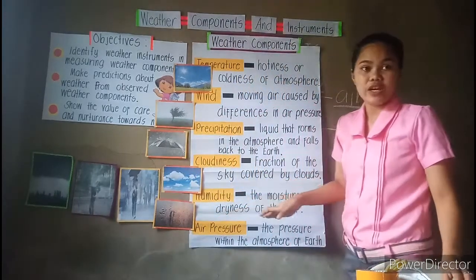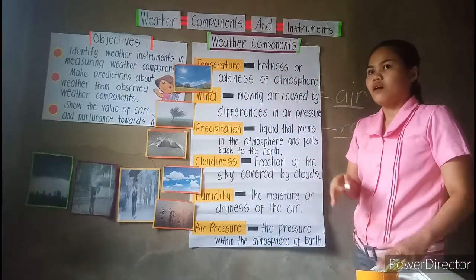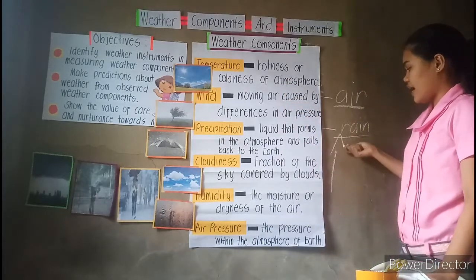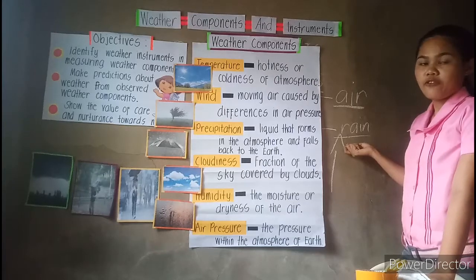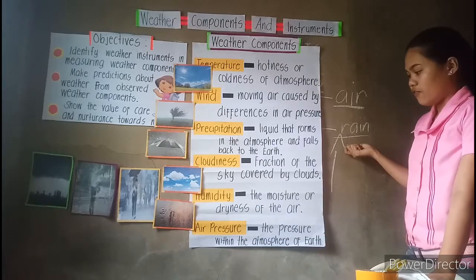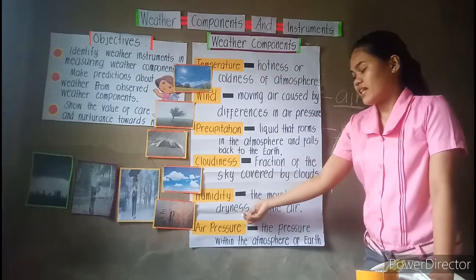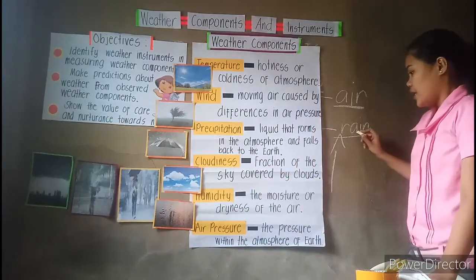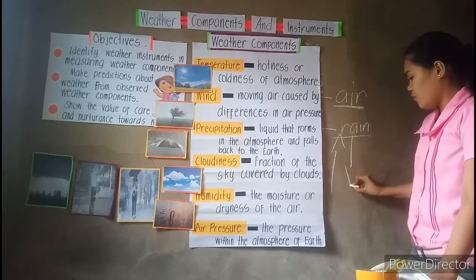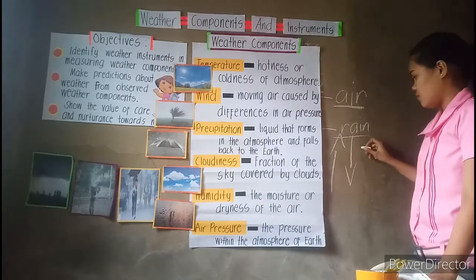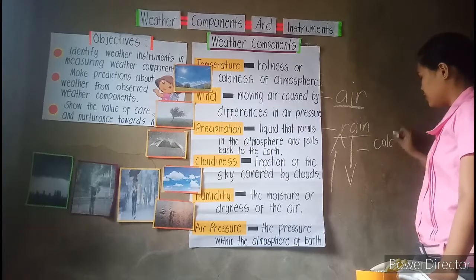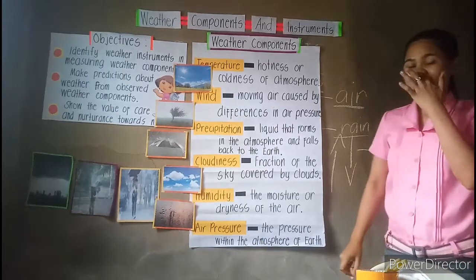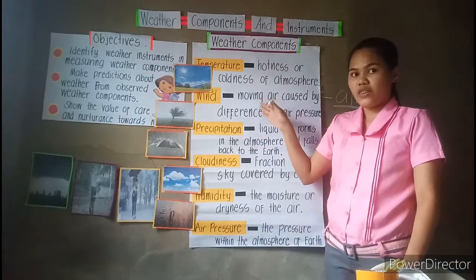Humidity affects weather in a way that, same as the temperature, when the humidity is high, of course it is an indicator of dryness — we have dry season. While when the humidity is low, we will experience coldness. So that is how humidity affects weather.